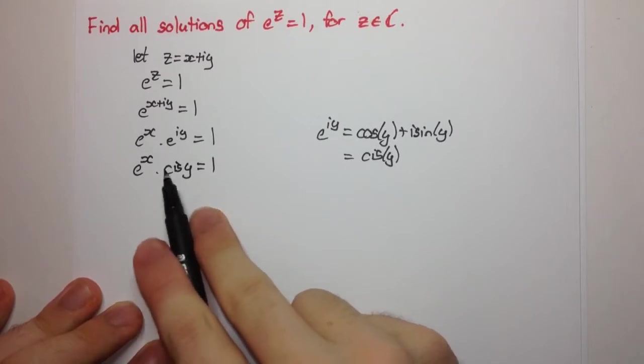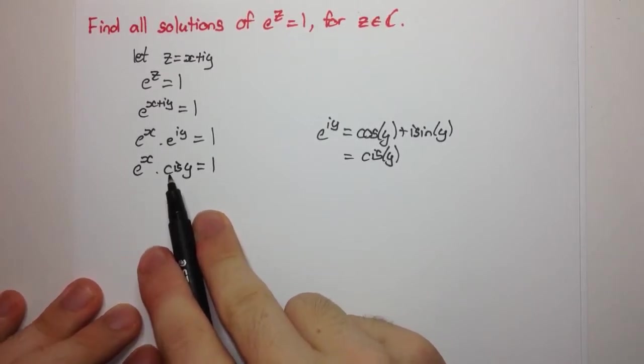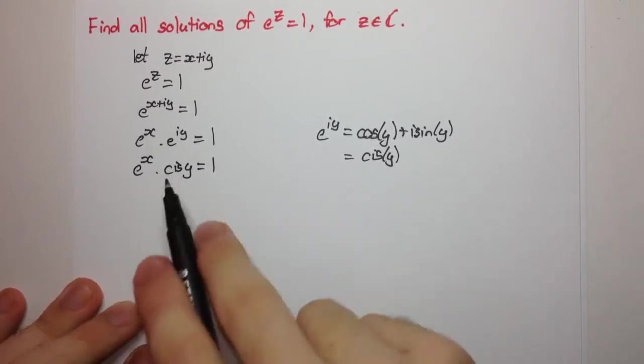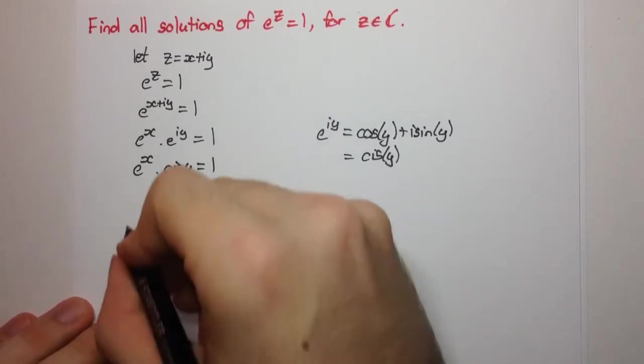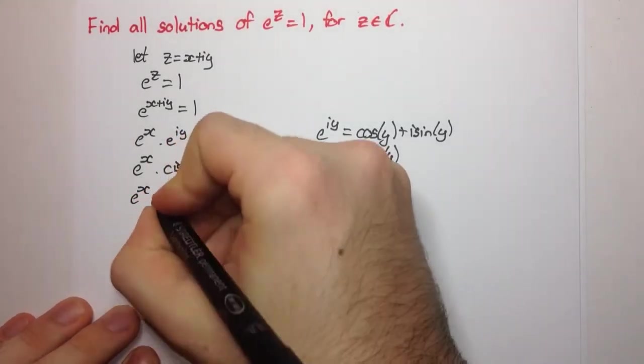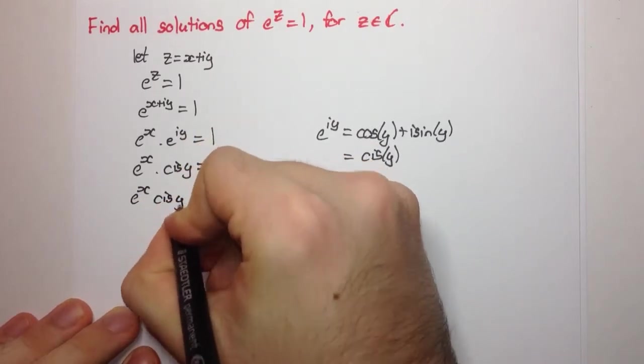So we have this in modulus multiplied by the argument. This is mod arg form here. So let's write 1 in mod arg form. What's 1 in modulus argument form? Well, let's have a look.